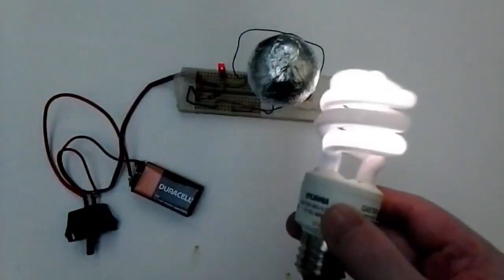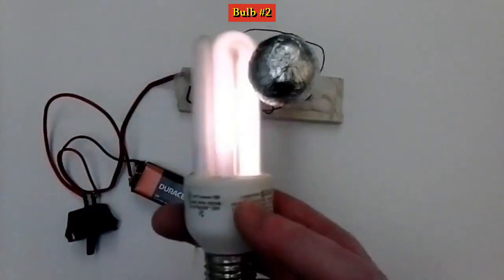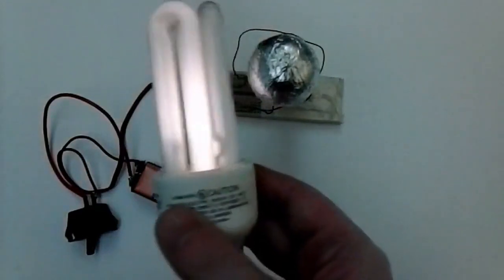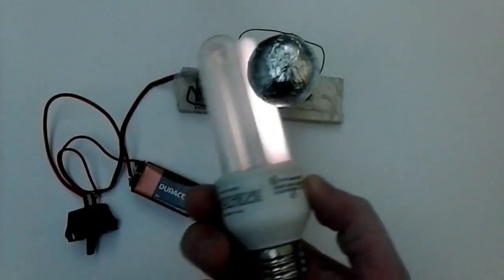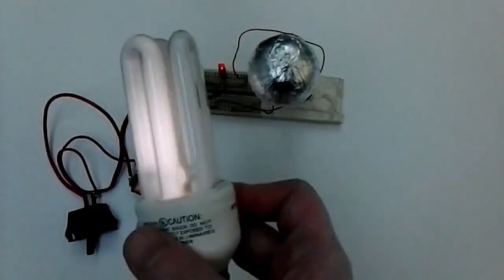A transistor's beta, also known as HFE, is its forward current gain. So I guess it's possible that the old transistor could have been good, but still not work in this Tesla coil. Therefore, if your Tesla coil isn't working, try another transistor.